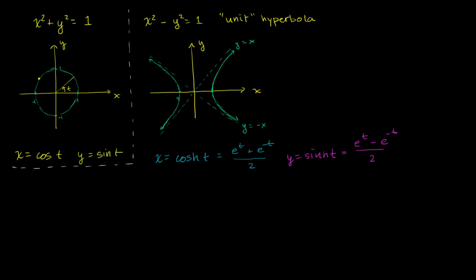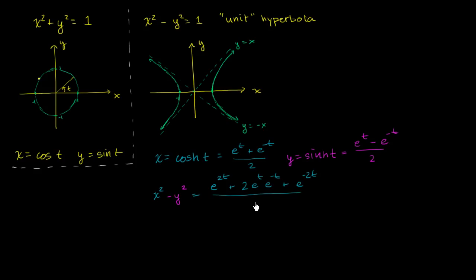Let's verify that. x squared minus y squared equals: squaring cosh(t) gives e to the 2t plus 2 times e to the t times e to the negative t plus e to the negative 2t, all over 4. Then we subtract y squared, whose numerator is e to the 2t minus 2 times e to the t times e to the negative t plus e to the negative 2t, all over 4.